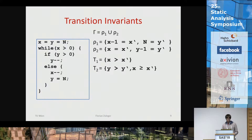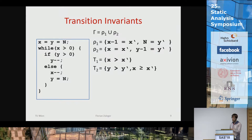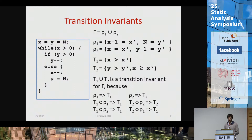Coming back to our example, now using transition invariants: the same program is modeled by relations rho-one and rho-two corresponding to the two branches of the loop, precisely modeling the semantics. We use T1 and T2 as transition invariants, claiming the transitive closure of program gamma is contained in the union of these two relations.